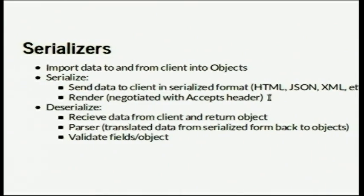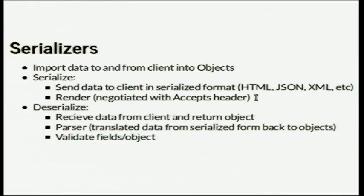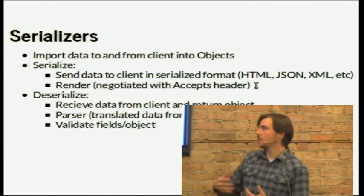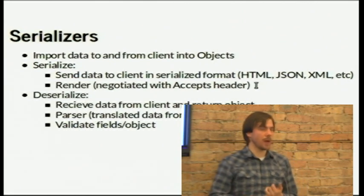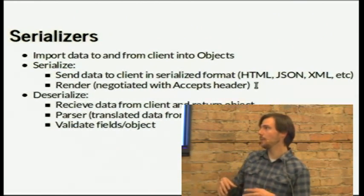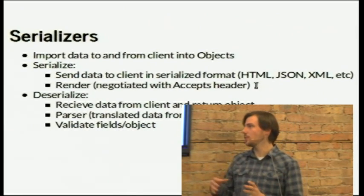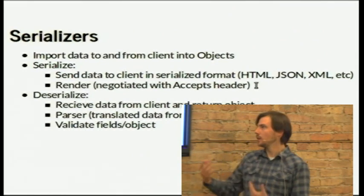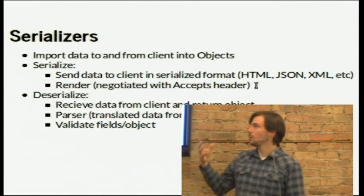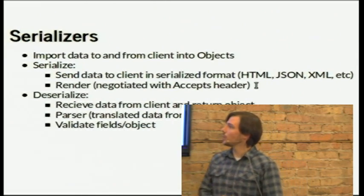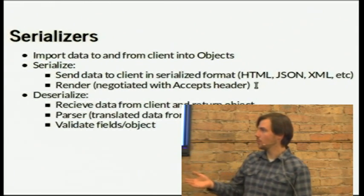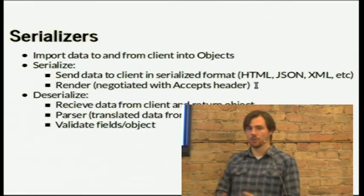What's the role of a serializer? It basically imports data to and exports data out of an object — your model objects. To serialize means you're sending data to the client in some serialized format: JSON, XML, or rendered to an HTML document. Django REST Framework handles this with the renderer, which negotiates via the HTTP Accept header, so the client can request XML or JSON and if you've enabled that renderer, it returns that. Deserializing works in the opposite direction: you get data from the client, build an object, save it to the database, and it can also do validation on that object.